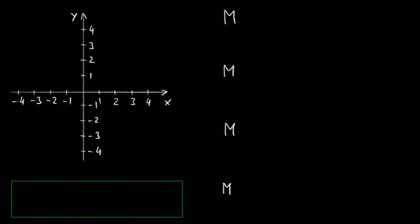As we learned from our previous video, the midpoint formula is m equals, the x-coordinate is x1 plus x2 over 2 and the y-coordinate is y1 plus y2 over 2.